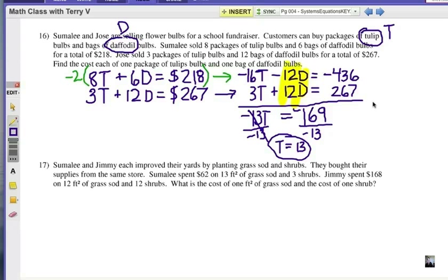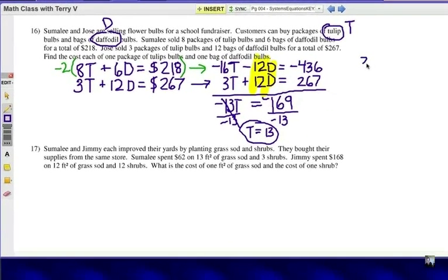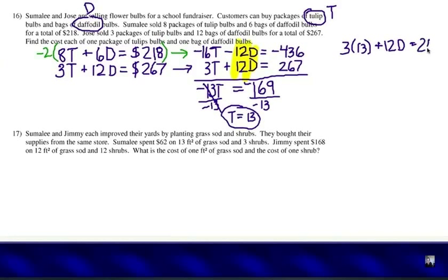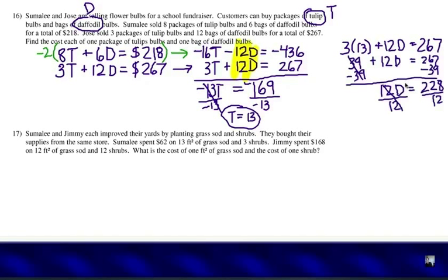We are going to substitute that into either equation. The second equation that we came up with looks like it has maybe some smaller numbers. I'm just going to choose that one. Instead of 3T, it's going to be 3 times 13, plus 12D equals 267. Let's solve it. We're going to have 12D equals 228 here towards the end. Divide each side by 12 and D would be 19. So, 13 bags of tulips and 19 bags of daffodils.